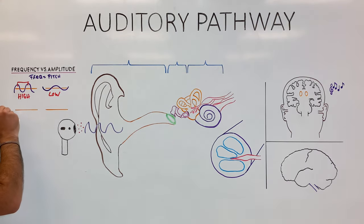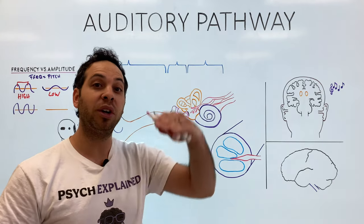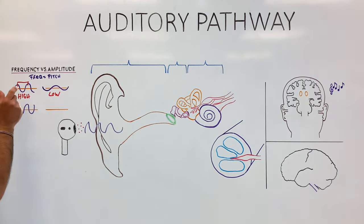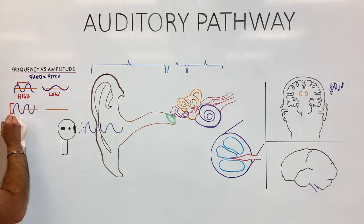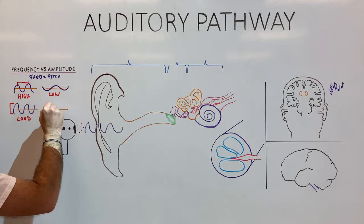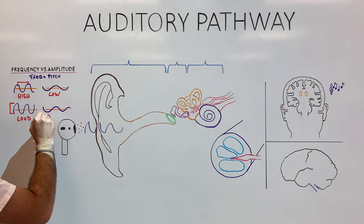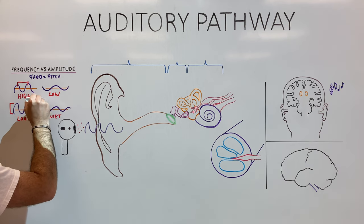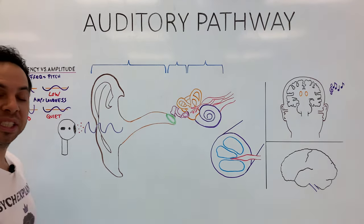We also have amplitude. And amplitude determines how loud a sound is, whether it's very loud or very quiet. And rather than peak to peak, amplitude is determined by the height of the wave. So the higher the wave, the louder it is. This would be a very loud wave, while this would be a very soft wave, very quiet. You're at a library and you've got a whisper. Frequency is pitch and amplitude is loudness.